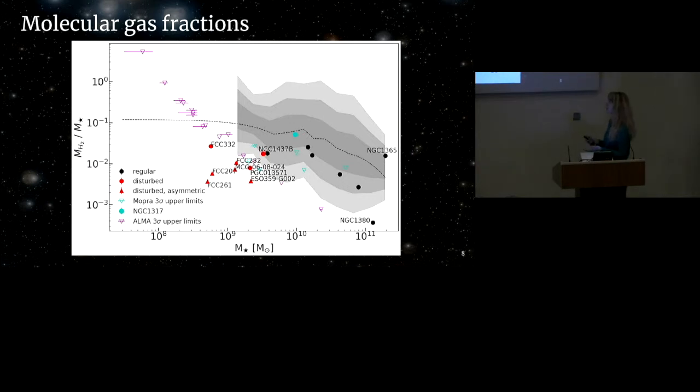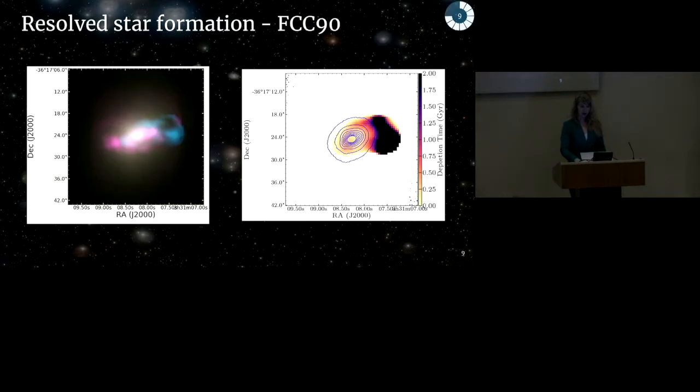And so we can see that there is this transition sort of around three times 10 to the nine solar masses, where all galaxies with stellar masses below this basically show disturbed molecular gas reservoirs. And the triangles here instead of the circles are the ones that show asymmetries like the example I showed earlier. So those are even more deficient than all the other ones.